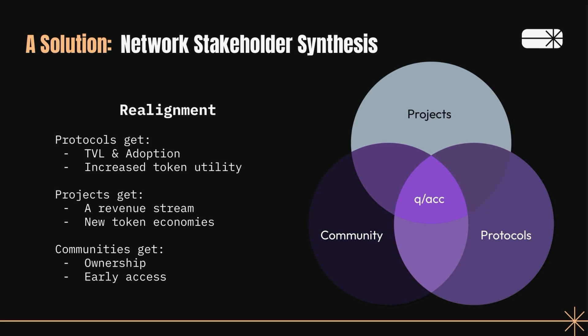What do projects get? Projects get a revenue stream and token economies. When you tell a team, 'Hey, would you rather have a one-time $50,000 grant or an $8 million token economy at the end of the year?' — that's a pretty easy question to answer. And then lastly, what do communities get? Communities get the promise of Web3: ownership, participation, access. This is our proposal for solving the grant alignment problem.